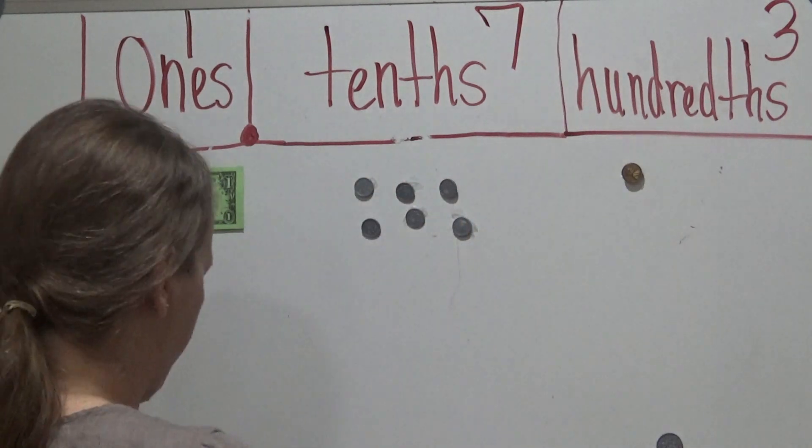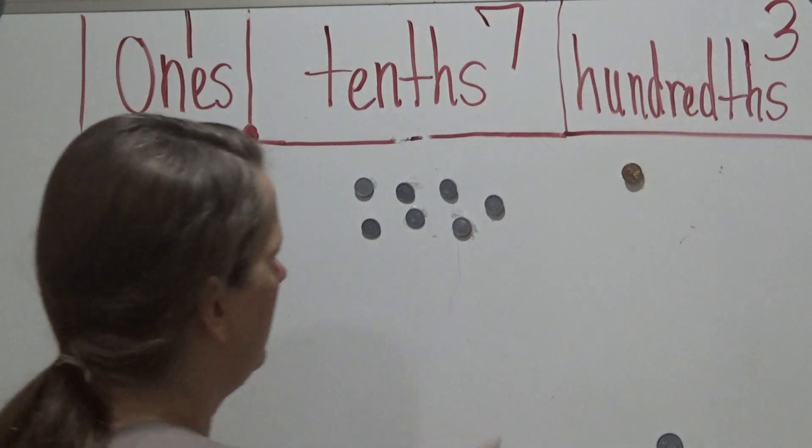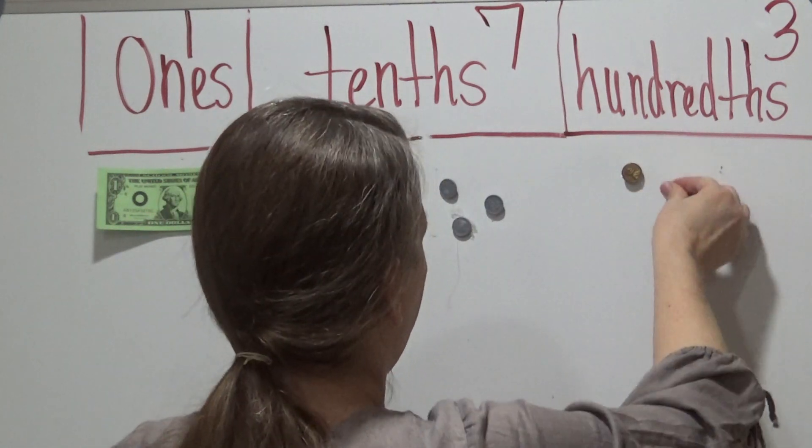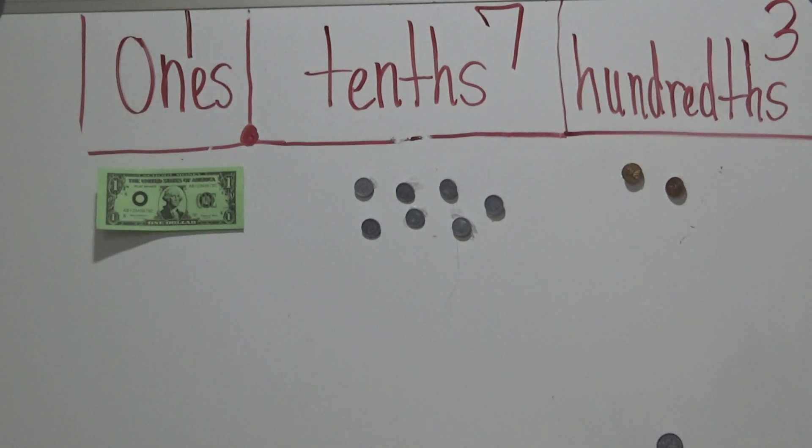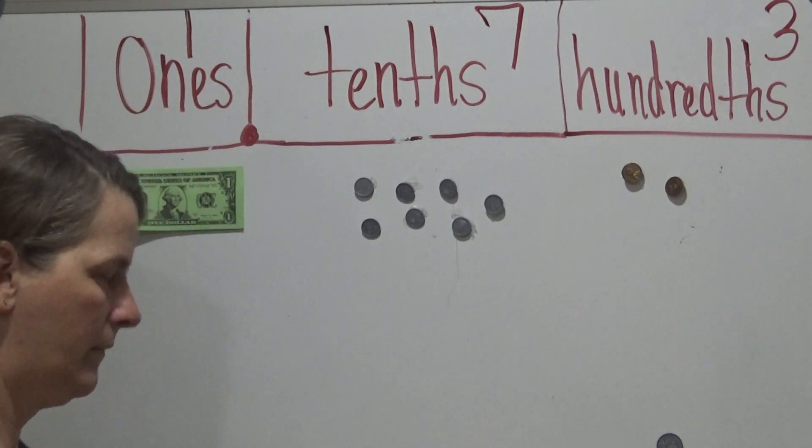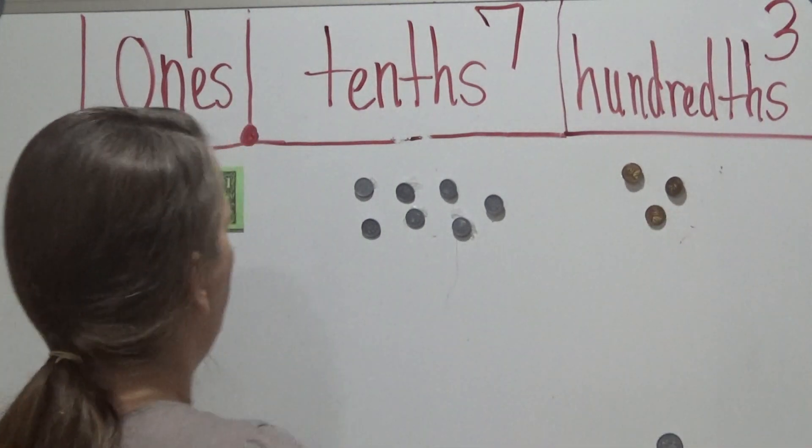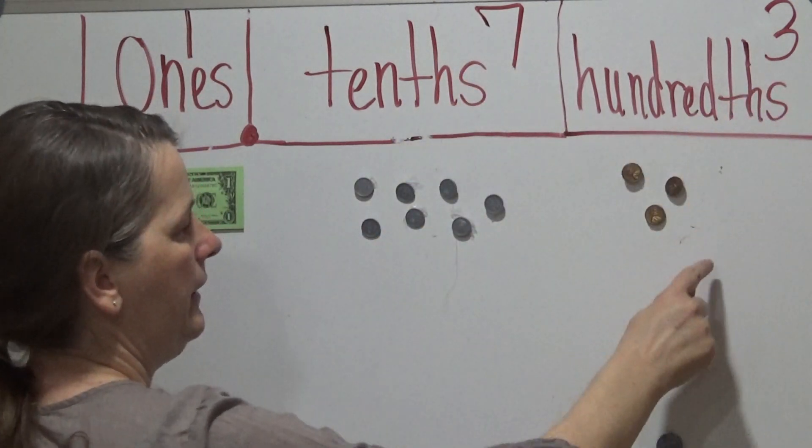One, two, three, four, five, six, seven dimes. We've got one, two, five, six, seven. And what do I need now? I need my other penny. So this represents one dollar, seven dimes, and three pennies.